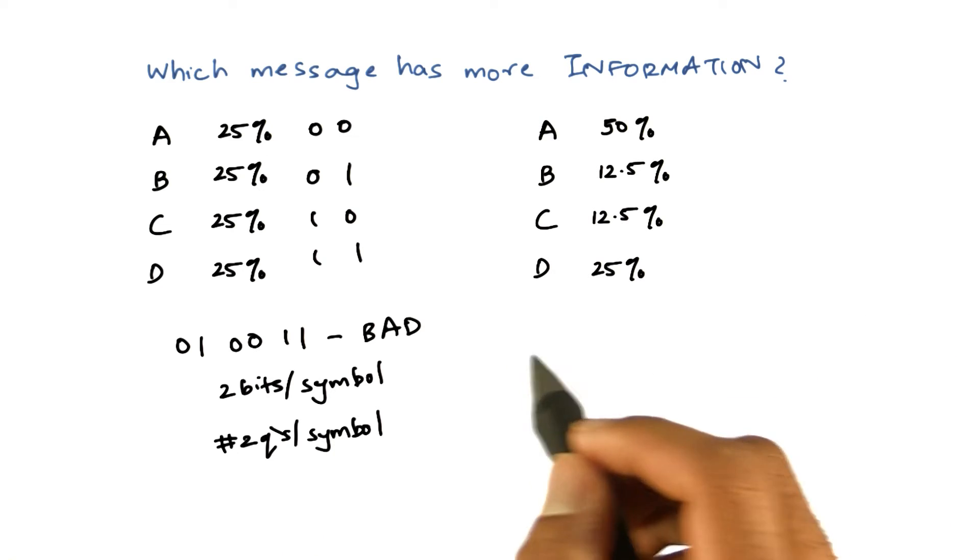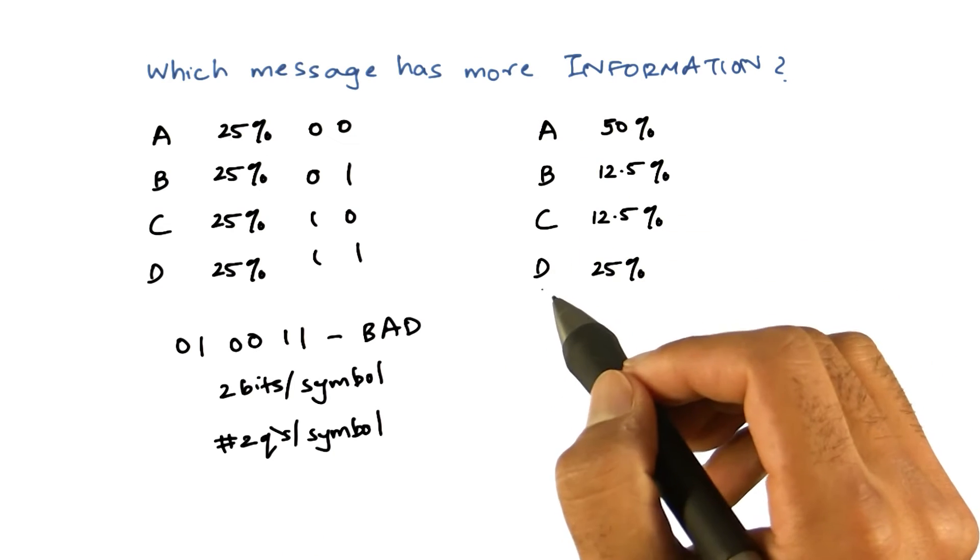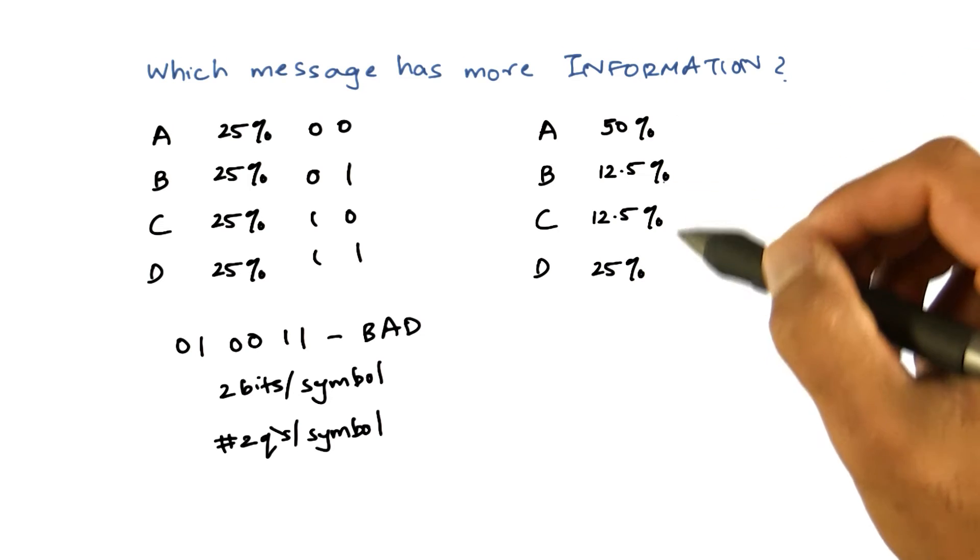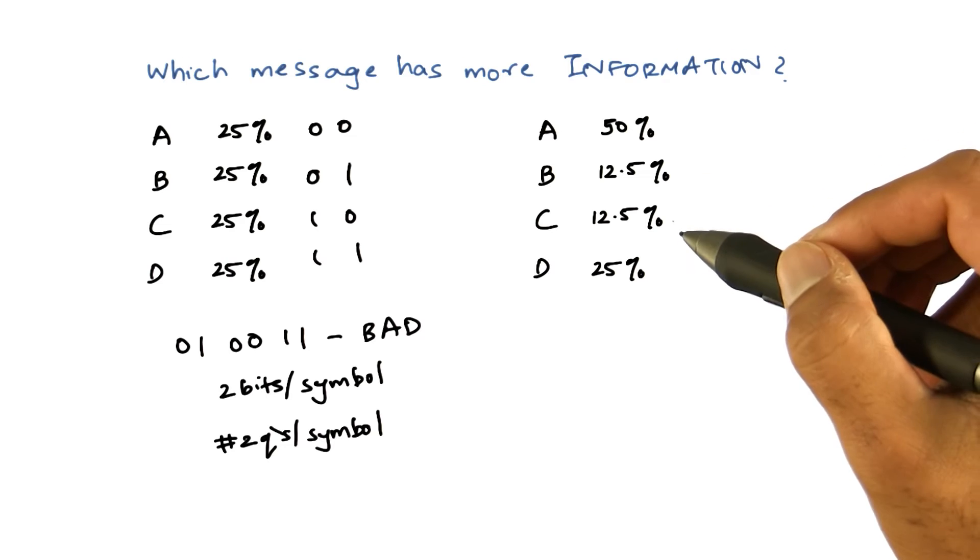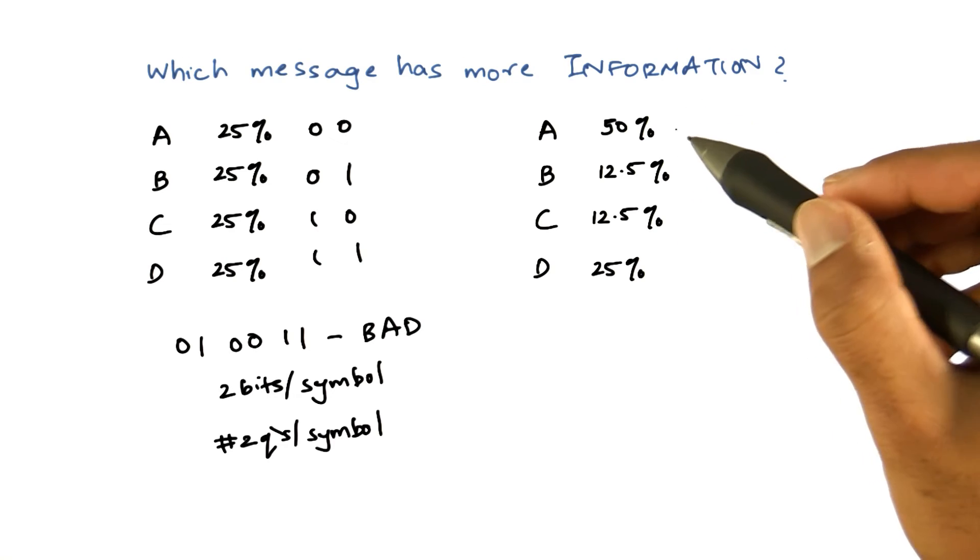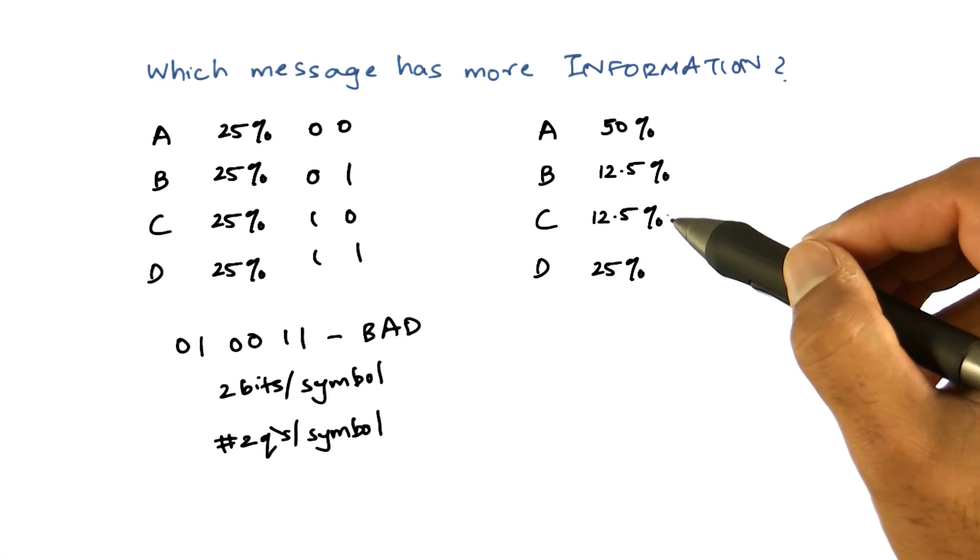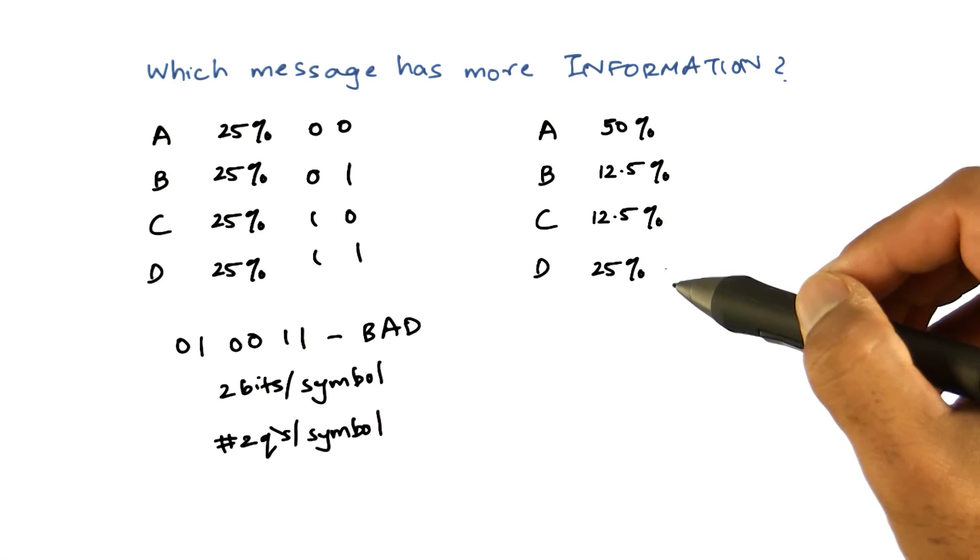Now, let's consider the second message to be made up of the same symbols. But in this case, A occurs more frequently than B, C, or D. D occurs more frequently than B and C. And let's assume that these are the probabilities by which we can see A, B, C, or D.